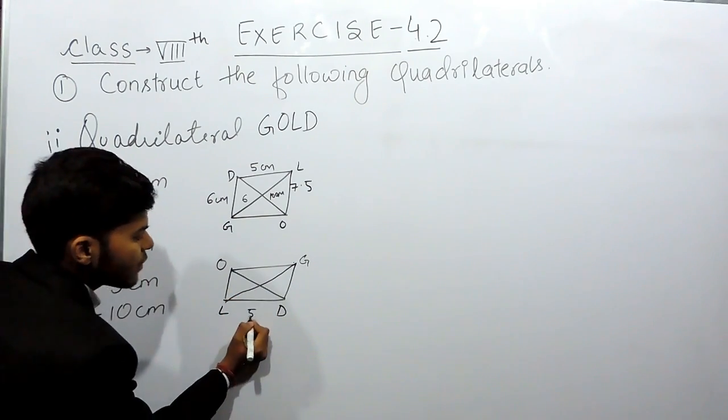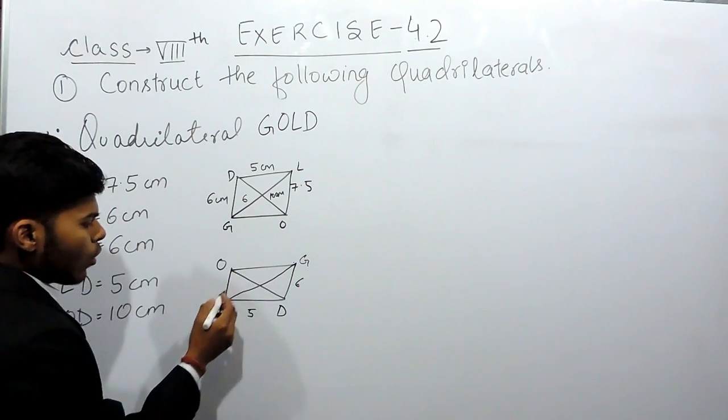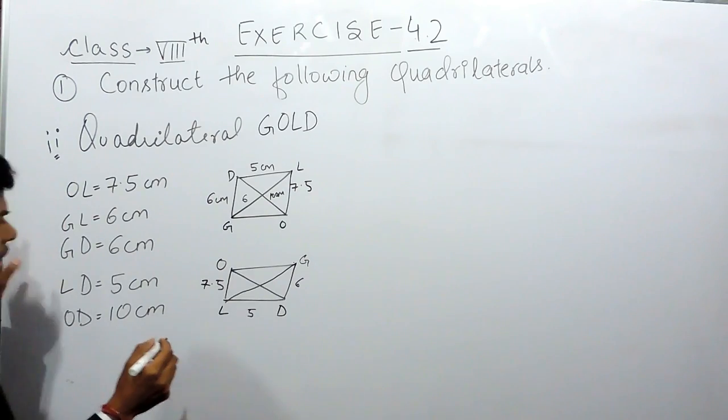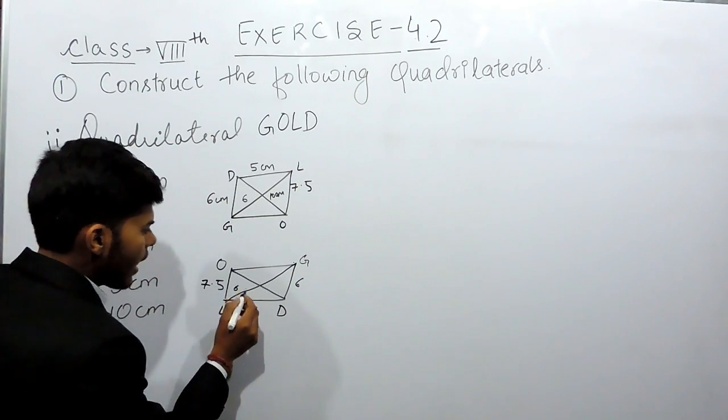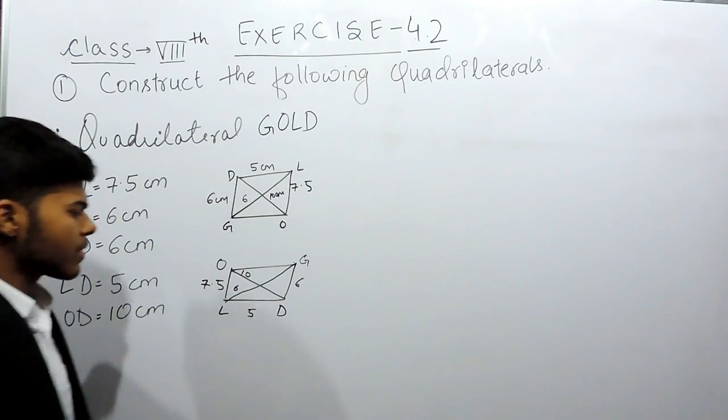Now we are given that LD is 5 cm, GD is 6 cm, LO is 7.5 cm, GL is 6 cm, and OD is 10 cm. Now we will construct this.